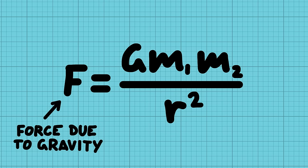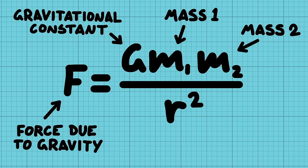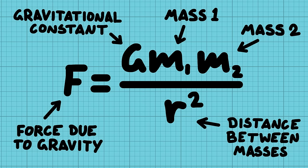F is the gravitational force that you're working out. M1 and M2 are the masses of the two bodies. G is the gravitational constant, and R is the distance between the masses.